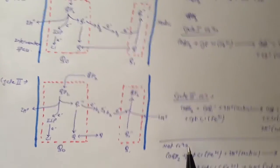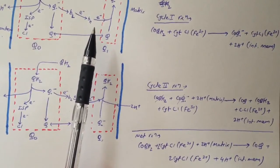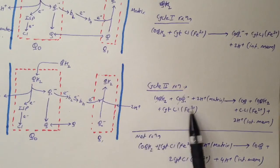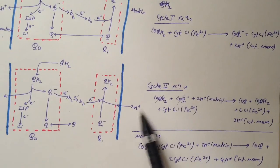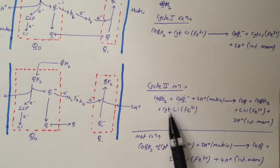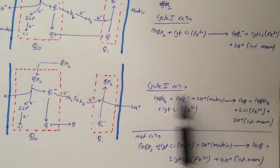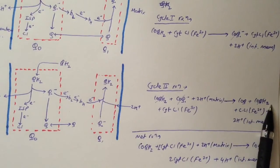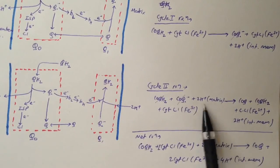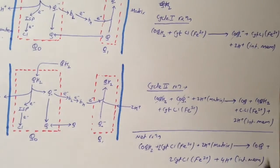The net reaction in cycle II: we start with coenzyme QH₂, coenzyme Q•⁻ at Qi, 2 H⁺ from the matrix, and cytochrome c1 in the Fe³⁺ state. We end up with one coenzyme QH₂ (reformed at Qi), one coenzyme Q, cytochrome c1 in the Fe²⁺ state, and 2 H⁺ released to the intermembrane space.